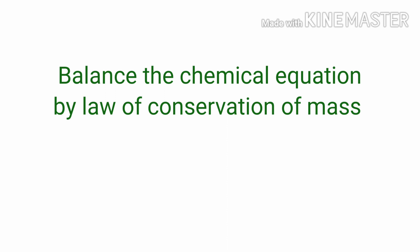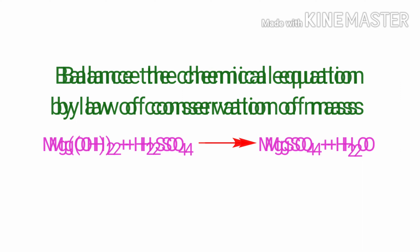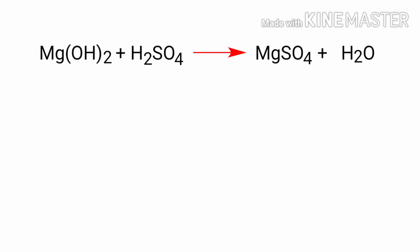Balance the chemical equation by law of conservation of mass. Magnesium hydroxide plus sulphuric acid gives us magnesium sulphate plus water. In this equation, the reactants are magnesium hydroxide and sulphuric acid, and the products are magnesium sulphate and water.